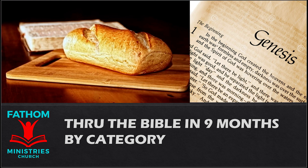You shall also make for it a grating, a network of bronze. And on the net you shall make four bronze rings at its four corners. You shall set it under the ledge of the altar so that the net extends halfway down the altar. You shall make poles for the altar, poles of acacia wood, and overlay them with bronze. The poles shall be put through the rings so that the poles are on the two sides of the altar when it is carried. You shall make it hollow with boards. As it has been shown you on the mountain, so shall it be made.